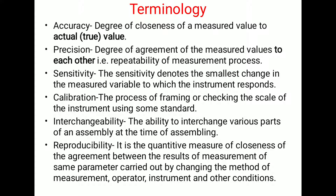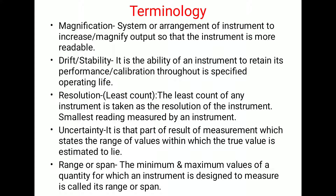The next terminology is reproducibility. It is the quantitative measure of closeness of agreement between the results of measurements of the same parameter carried out by changing the method of measurement, operator, instrument, and other conditions. In simple words, it is whether the measuring system reproduces the same or approximately the same set of readings under given conditions. That characteristic is called reproducibility.